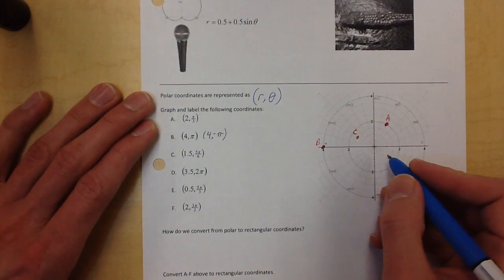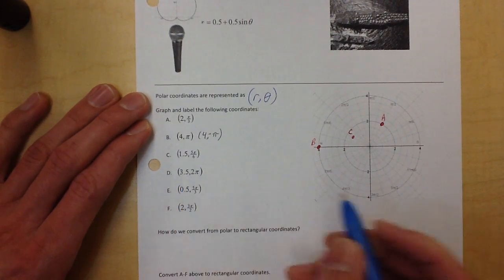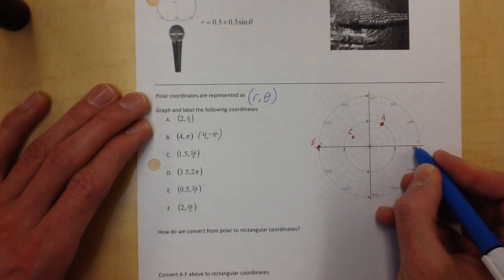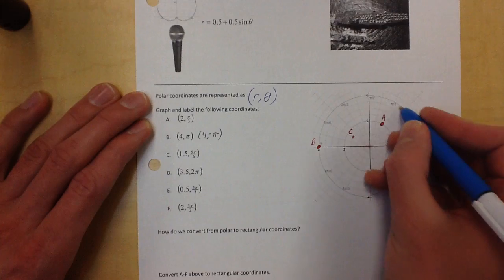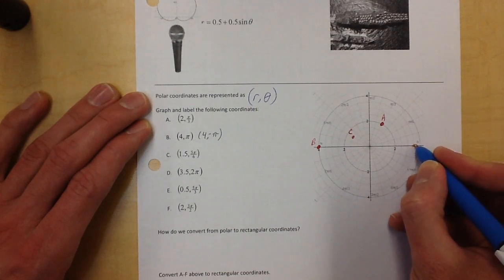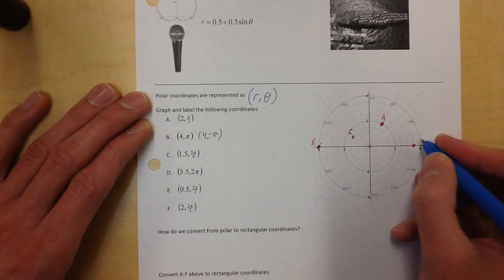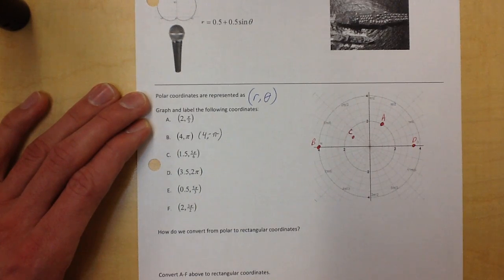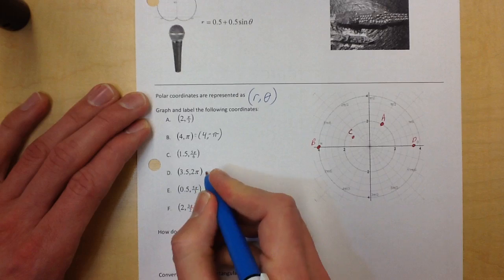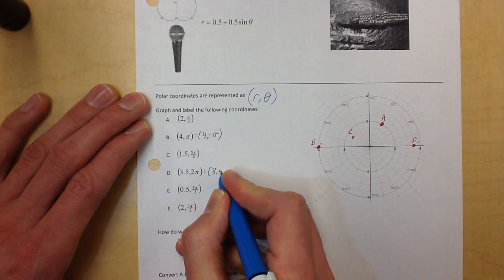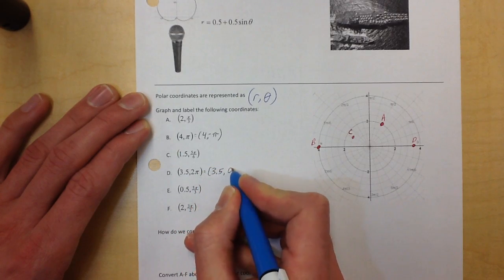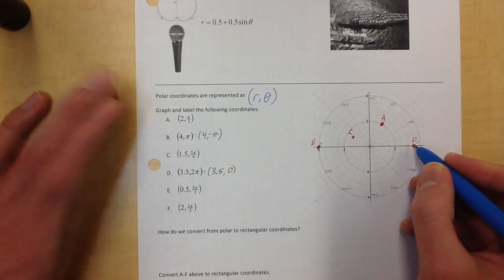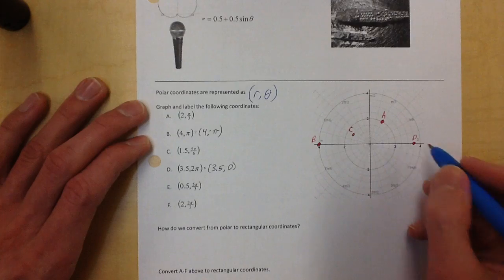I'm going to keep explaining for those that need to see a bit more. So (3.5, 2π): here's three, there's three and a half, and we're going to go around 2π — which puts us exactly where we started. That's the letter D. For what it matters, this is equivalent to (3.5, 0). I could go out three and a half and then go around none at all, and it puts me right back where I started.